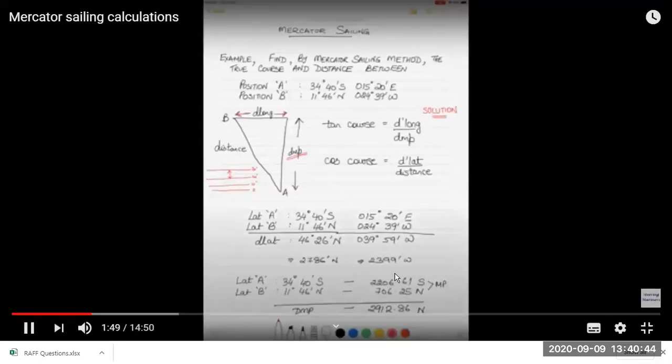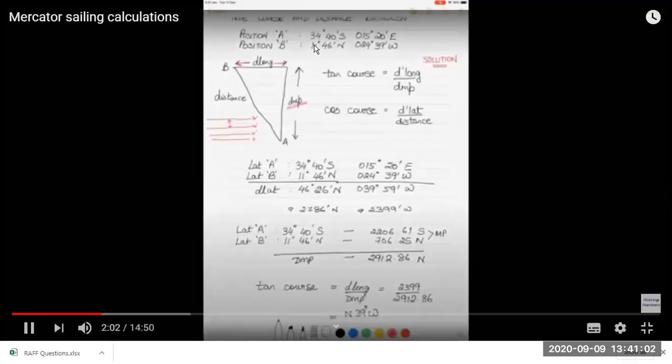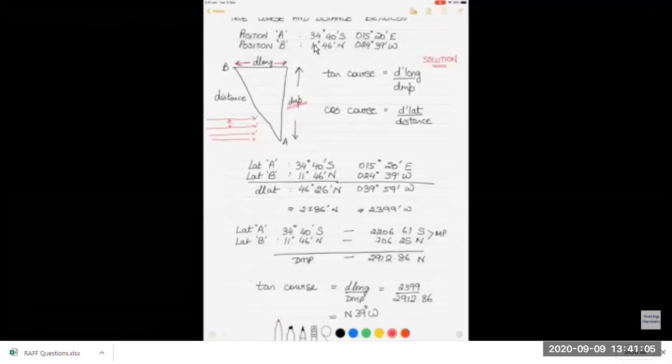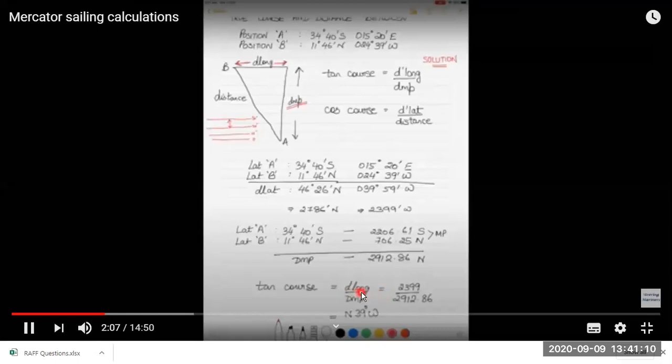We get the meridional parts from Norie's table for both the latitudes and we take the difference between the meridional parts, that is your dmp, difference in meridional parts. For calculating the tan course we need this d long and dmp. So d long we got 2399 west and dmp 2912.86 north. So we get the tan course which will be 39.24 but we round off because the course can generally be steered to the nearest degree or nearest 0.5.